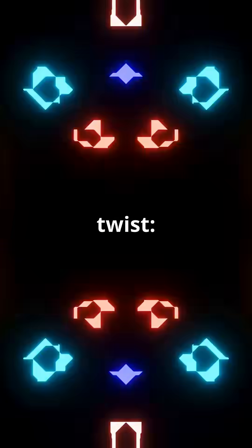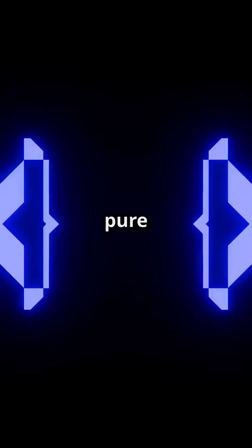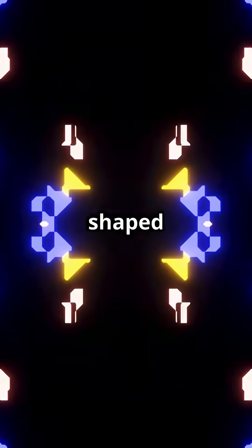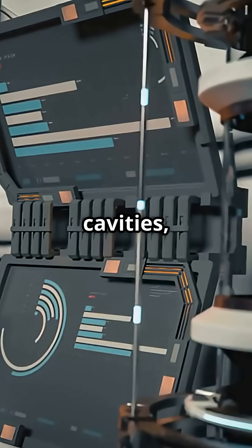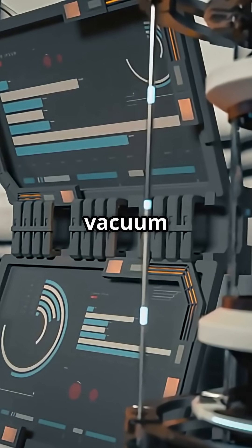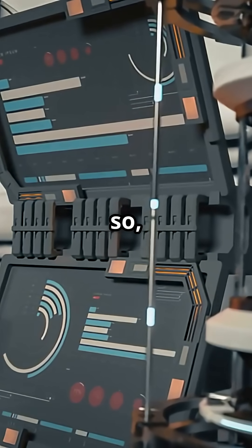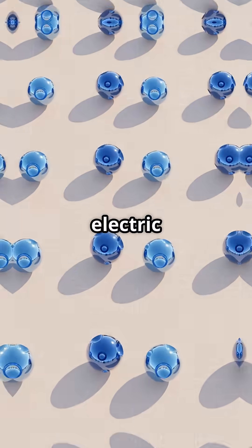Here's the twist. Vacuum fluctuations, once thought of as pure noise, can now be shaped and tuned. By placing materials in these optical cavities, scientists can control how the vacuum interacts with them. And in doing so, change their magnetic or electric states.